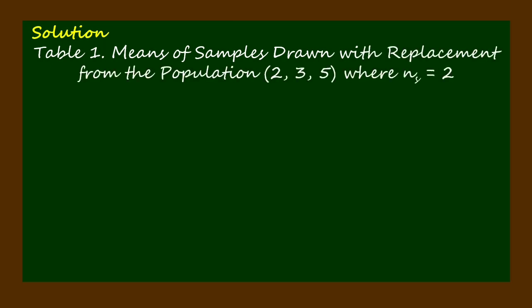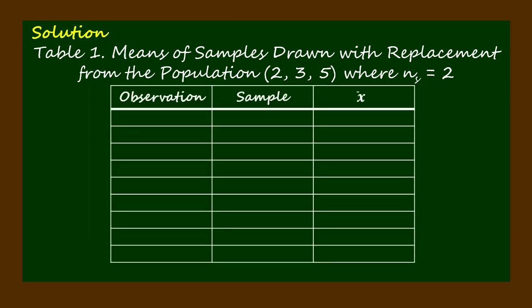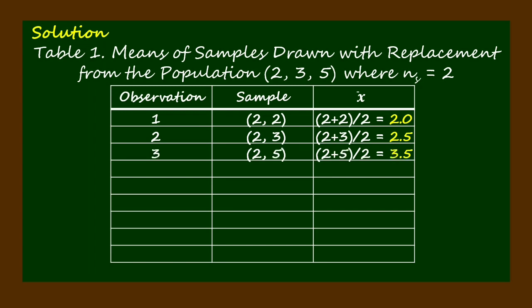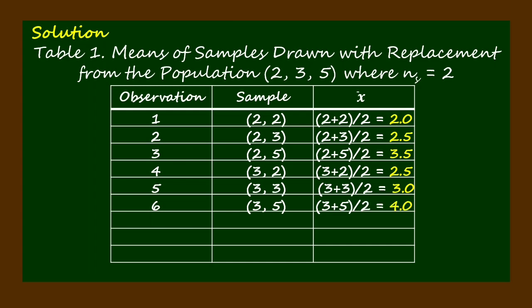The samples are 2 and 2, and the sample mean is 2.0. For the second observation, the samples are 2 and 3, and the sample mean is 2.5. For the third observation, the samples are 2 and 5, and the sample mean is 3.5. For the fourth observation, the samples are 3 and 2, and the sample mean is 2.5. For the fifth observation, the samples are 3 and 3, and the sample mean is 3.0.